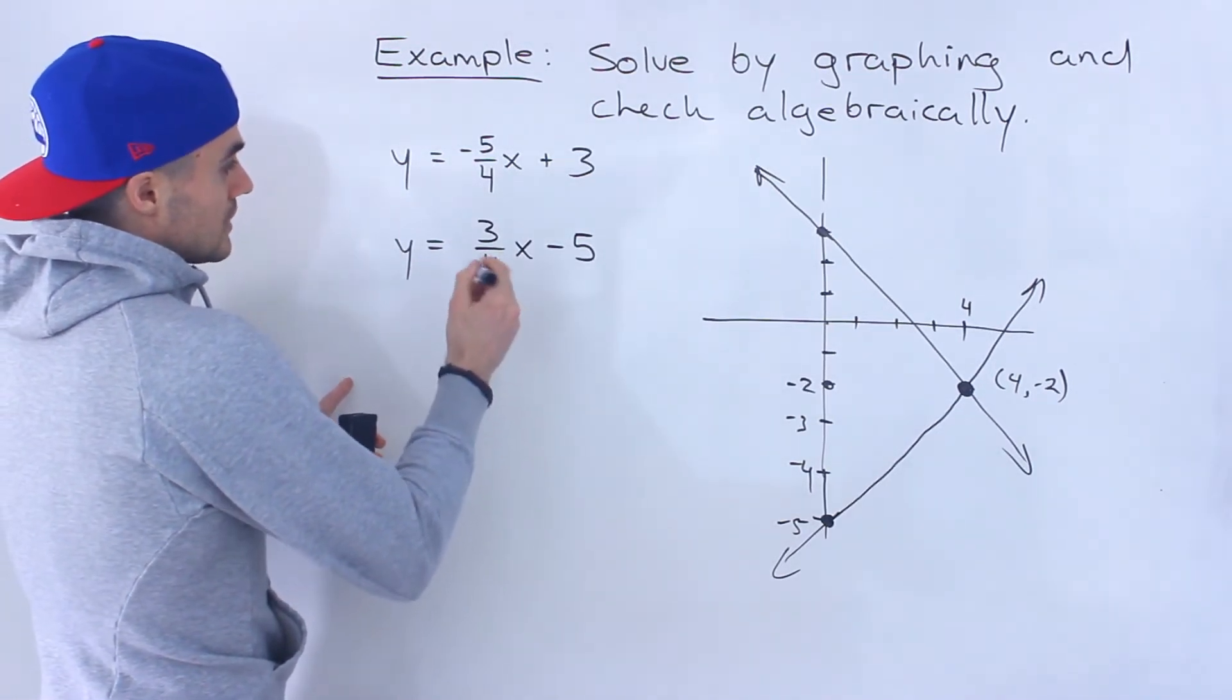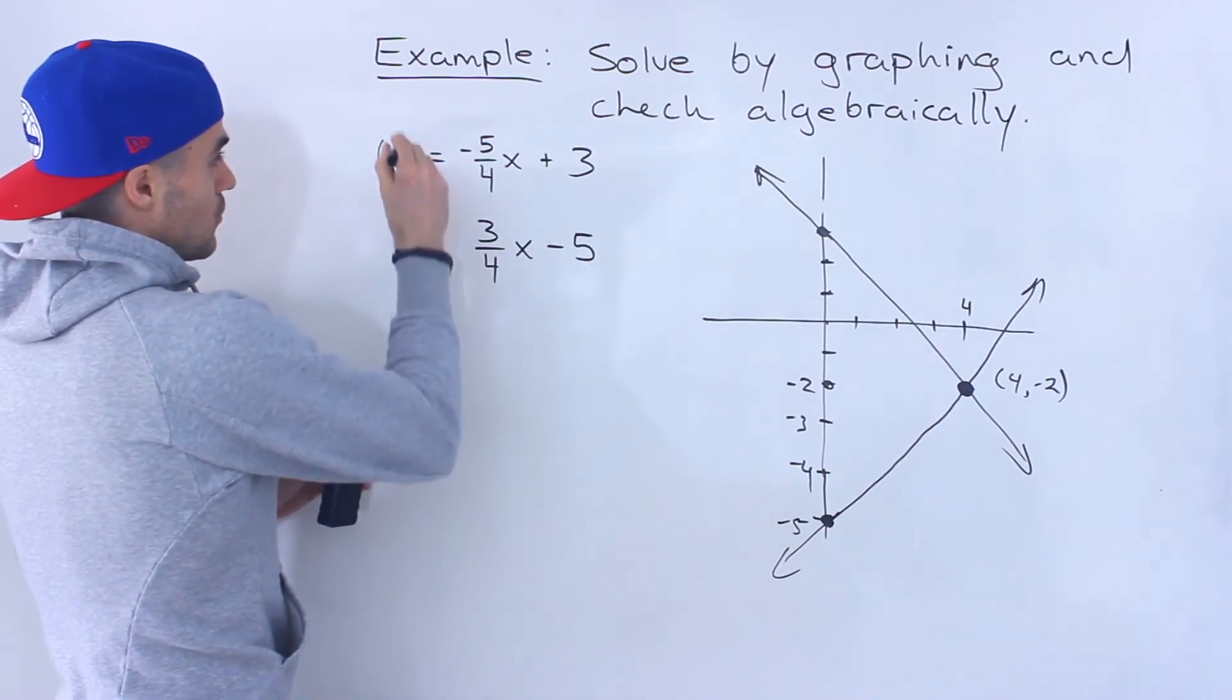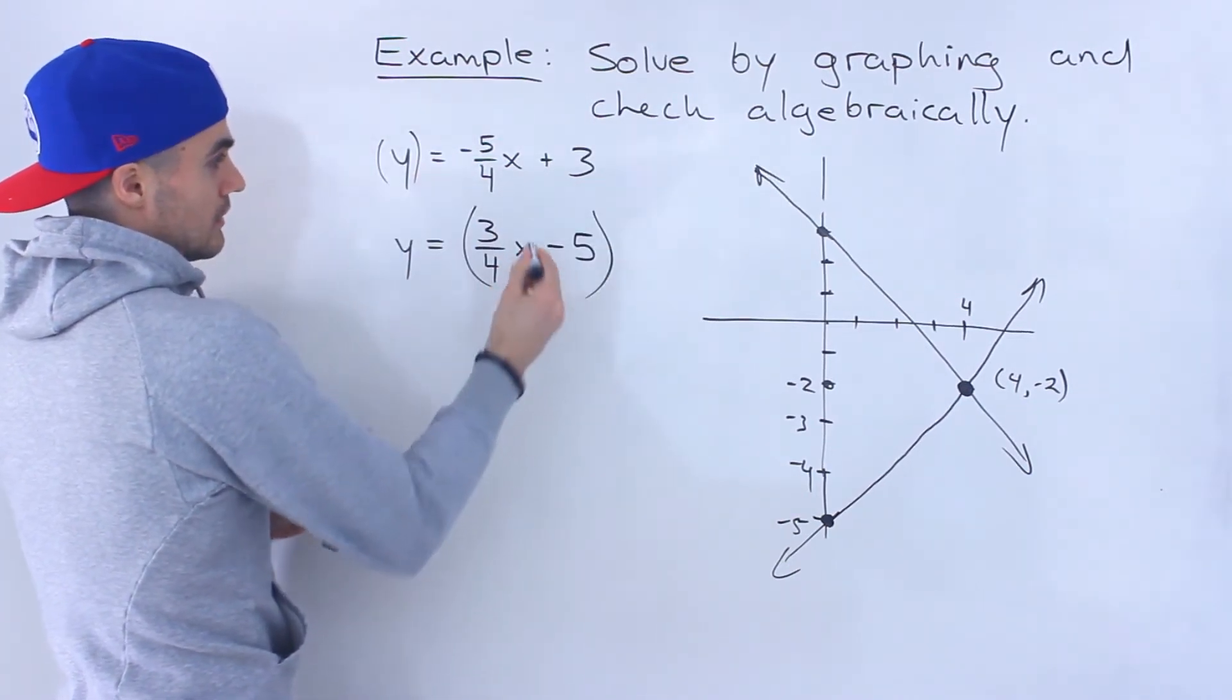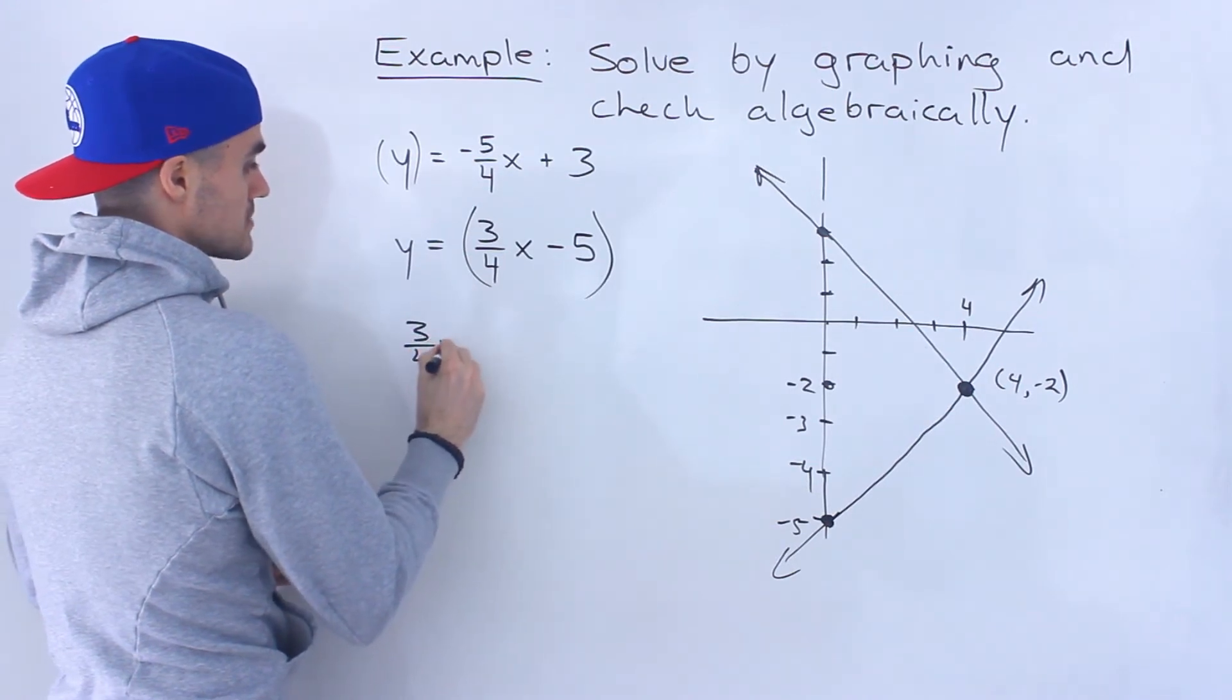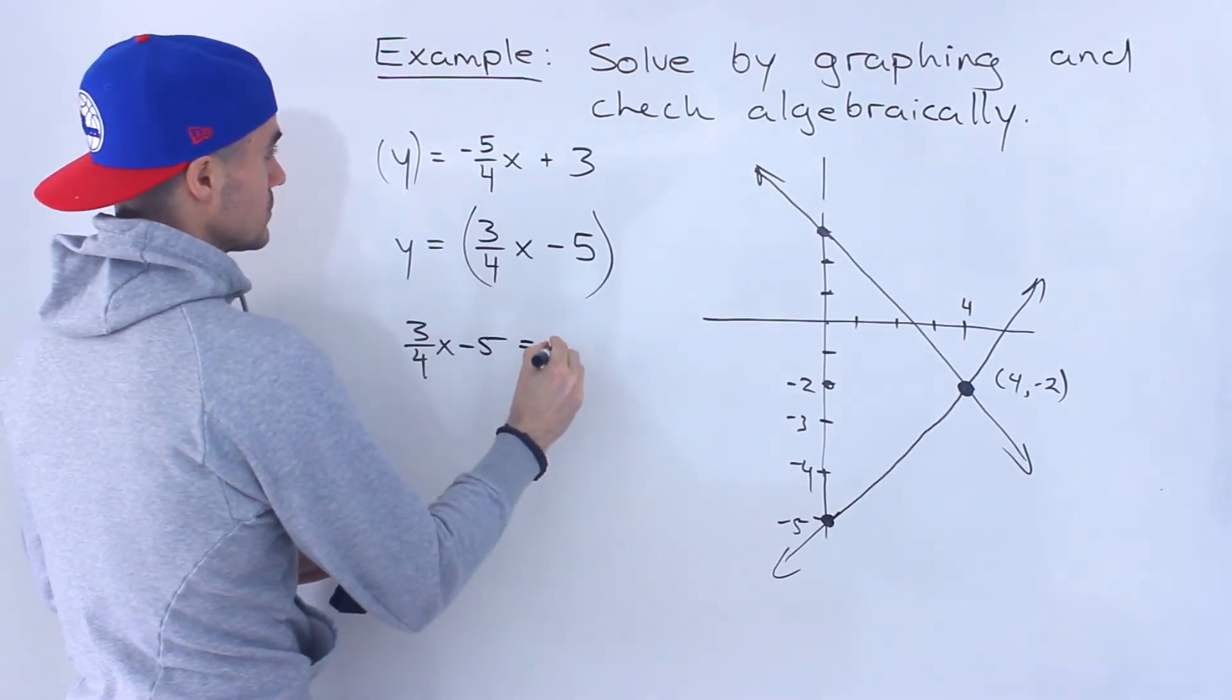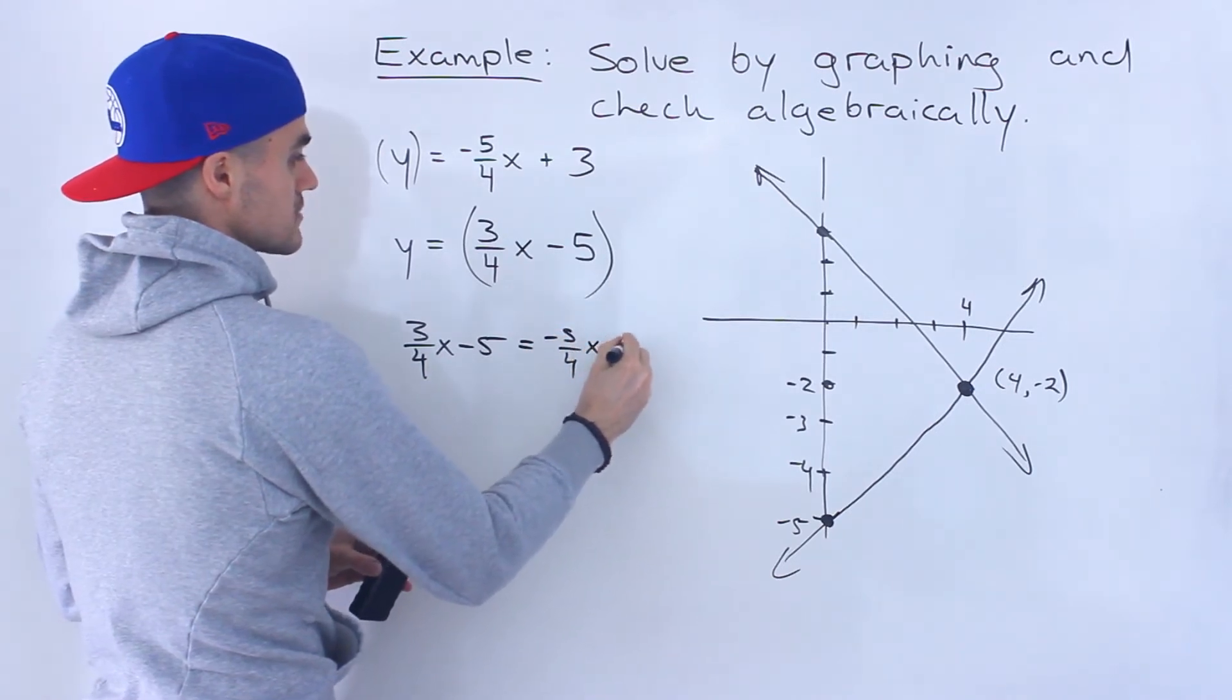Different ways we can do this. What I'm going to do is substitution. So for this y value, I'm going to plug in this expression. So we would end up having 3 over 4x minus 5 equals negative 5 over 4x plus 3.